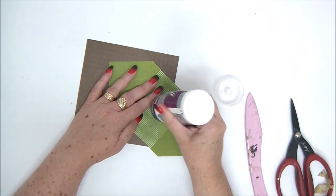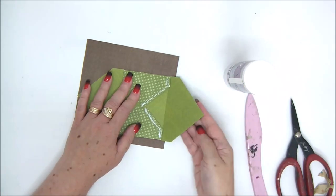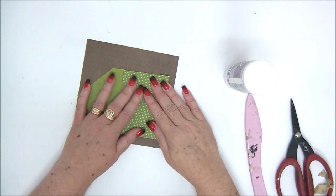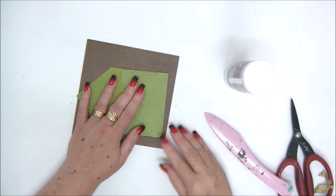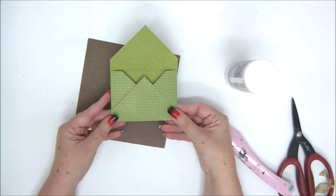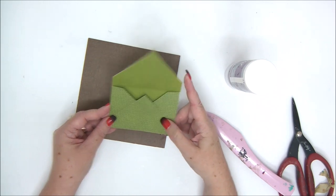So now fold in the two smaller sides, apply glue and close your envelope. Okay, so we have our first envelope. Let's do the other one as well. Really cute.